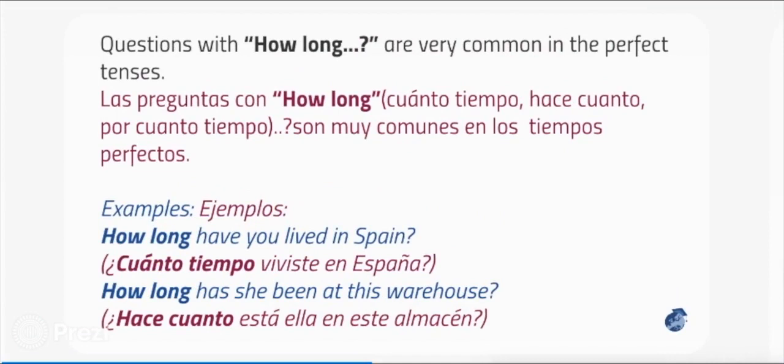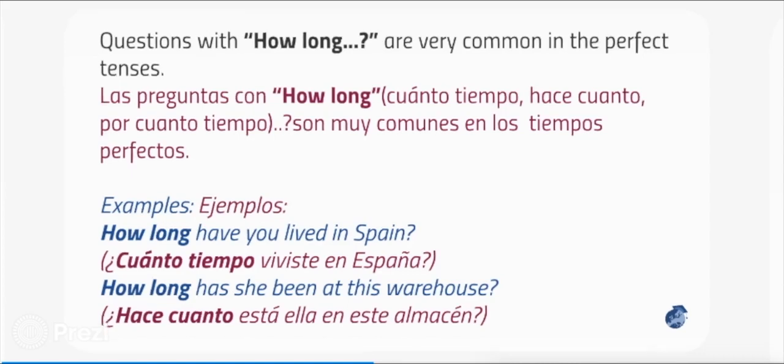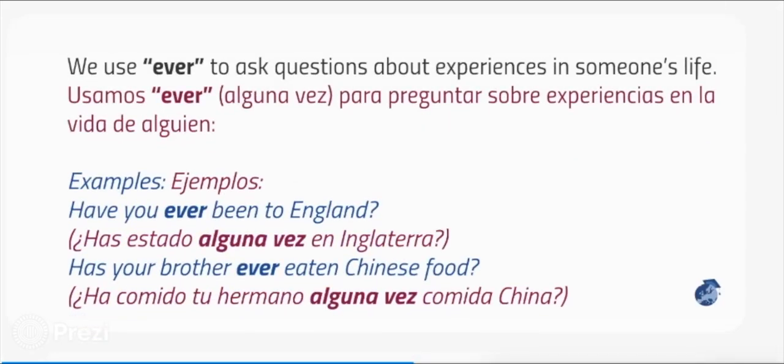Questions with how long are very common in the perfect tenses. Examples: how long have you lived in Spain? How long has she been at this warehouse? We use ever to ask questions about experiences in someone's life. Examples: have you ever been to England? Has your brother ever eaten Chinese food?